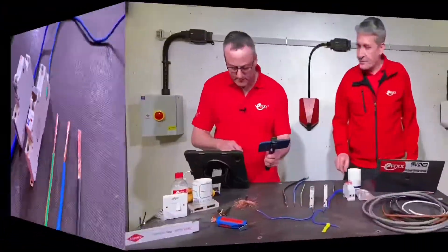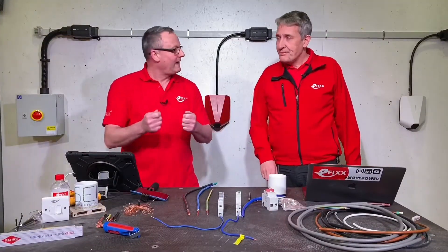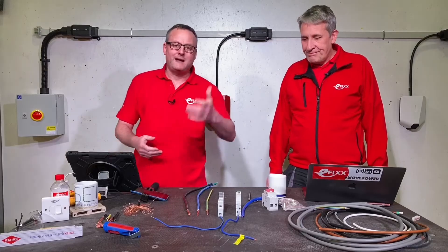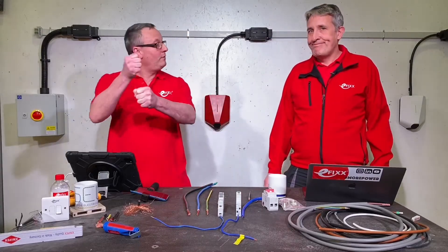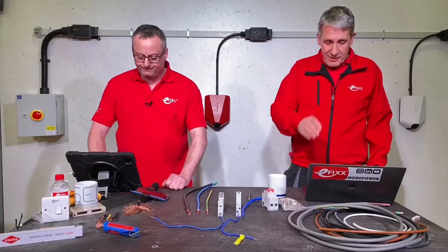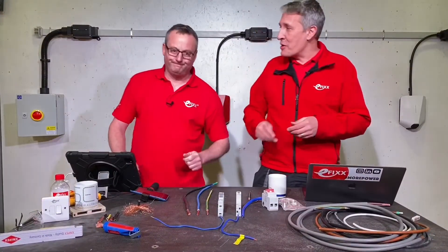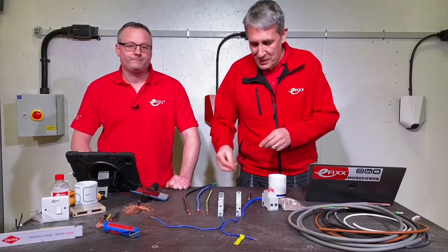There's a millimetre difference in diameter between the class 2 and the class 5 and 6 conductors. When you're in a distribution board feeling those tails from main switches, that could be class 5 or class 6 — you tend to think they're a little bit bigger. A solid conductor would be 4.6mm, the class 2 is 5.3mm, and the class 5 and 6 are 6.3mm — all the same cross-sectional area for current-carrying capacity.